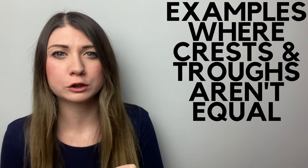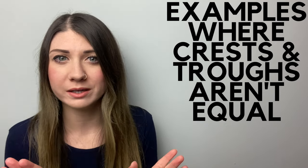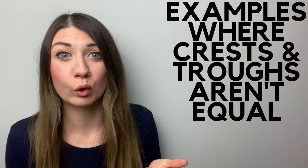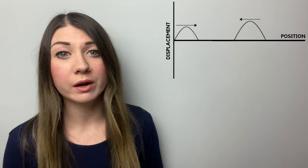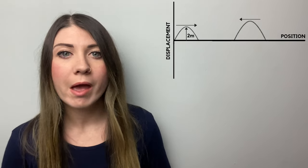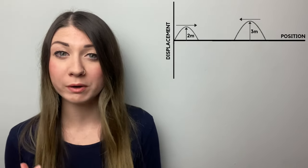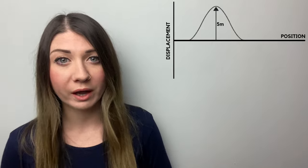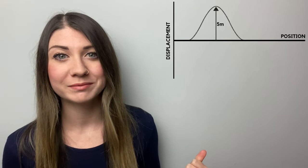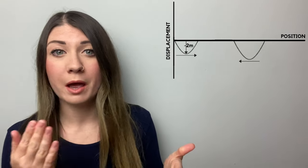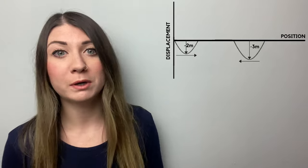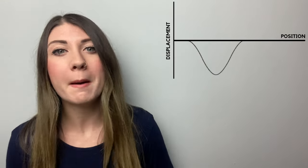Now let me do just two quick examples where the crests and the troughs aren't equal in size, just to make sure that we've all got it. So if you had two crests moving towards each other where wave one had an amplitude of four meters and wave two had an amplitude of three meters, then the combined wave would have an amplitude of five meters. And the same goes for if you had two troughs moving towards each other with an amplitude of minus two meters and minus three meters. The amplitude of the combined wave would be minus five meters.